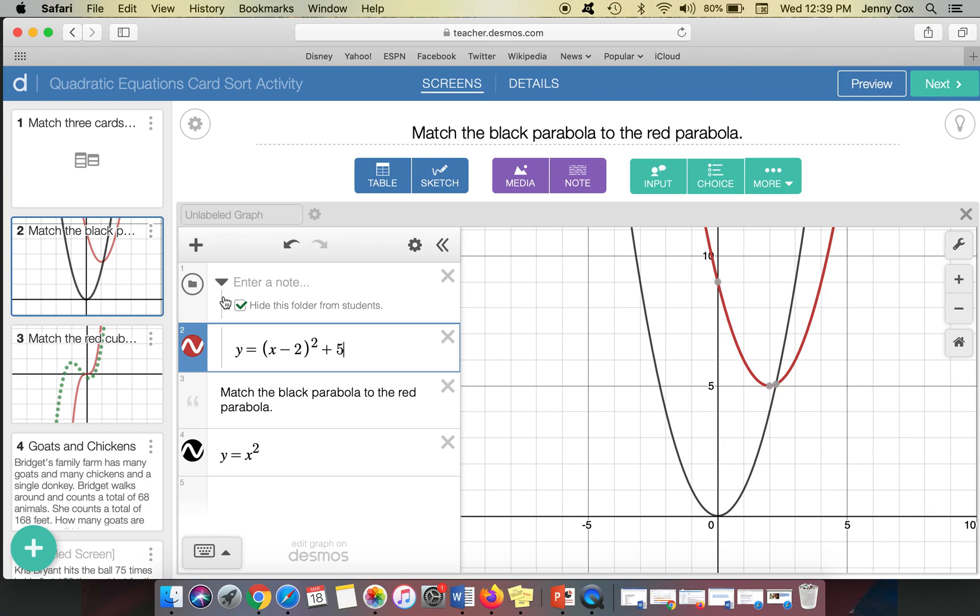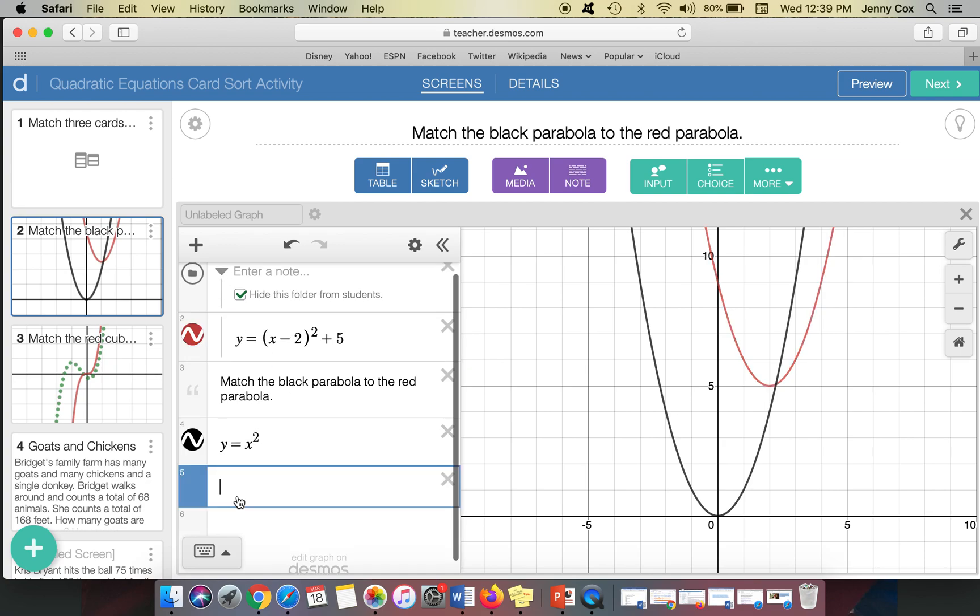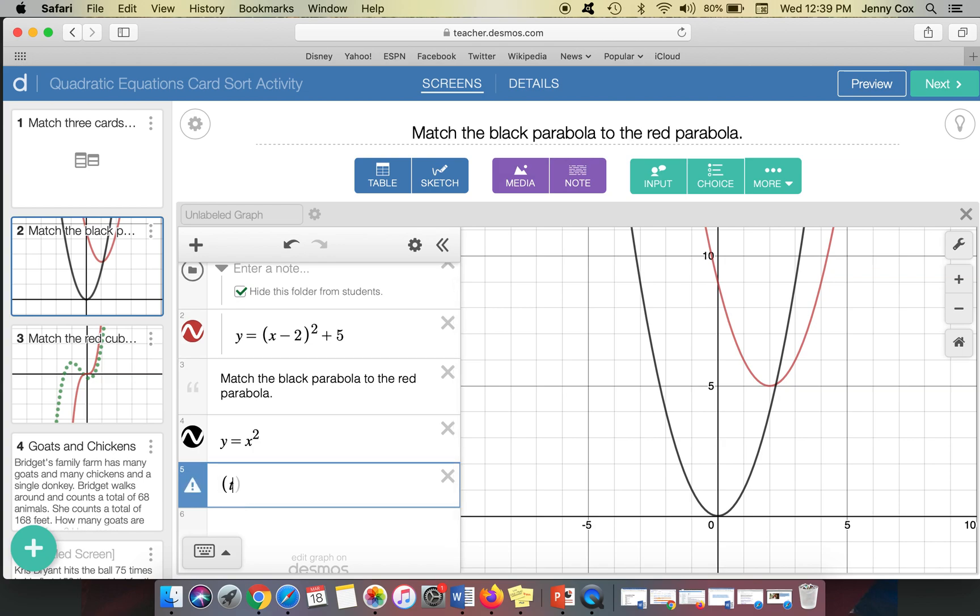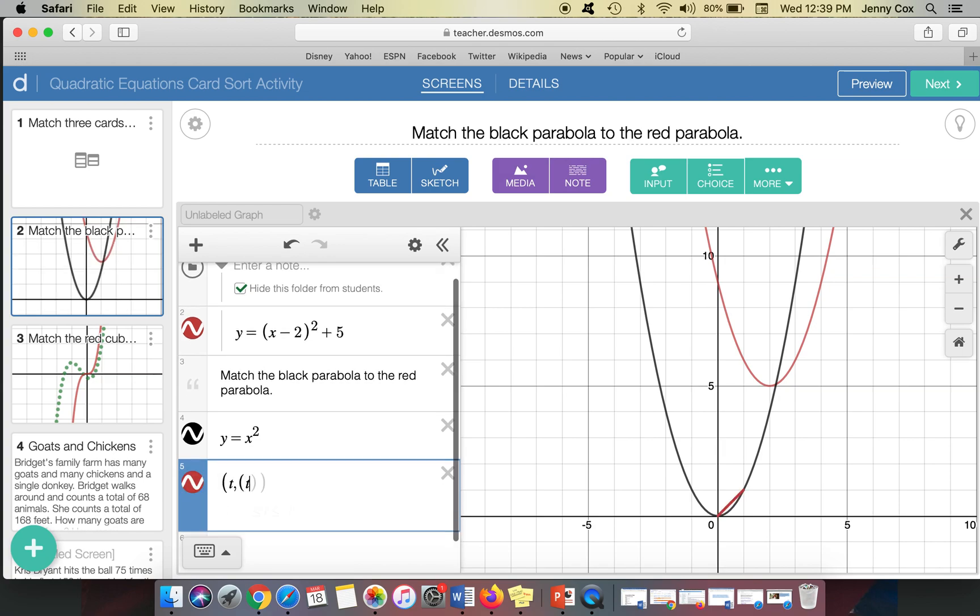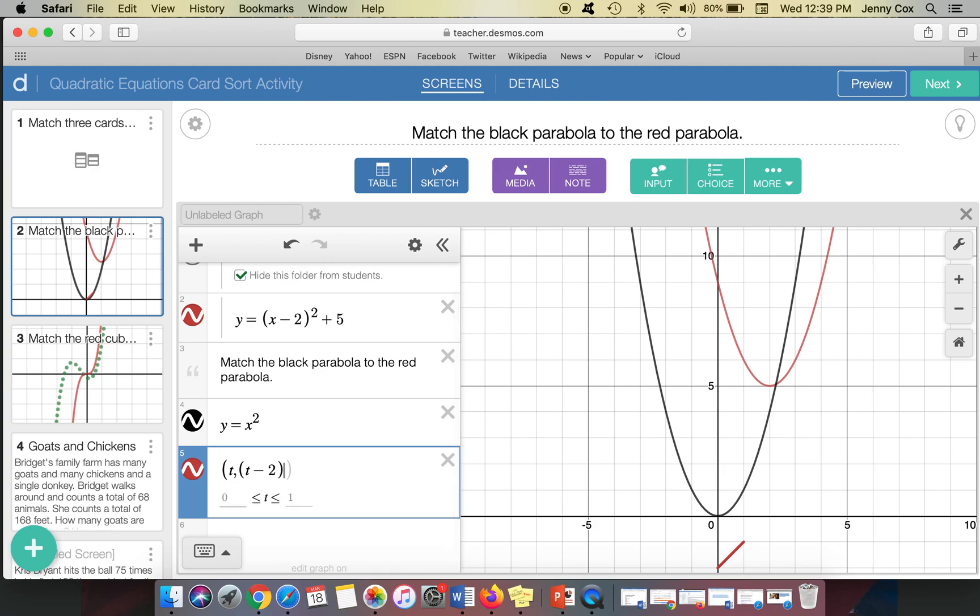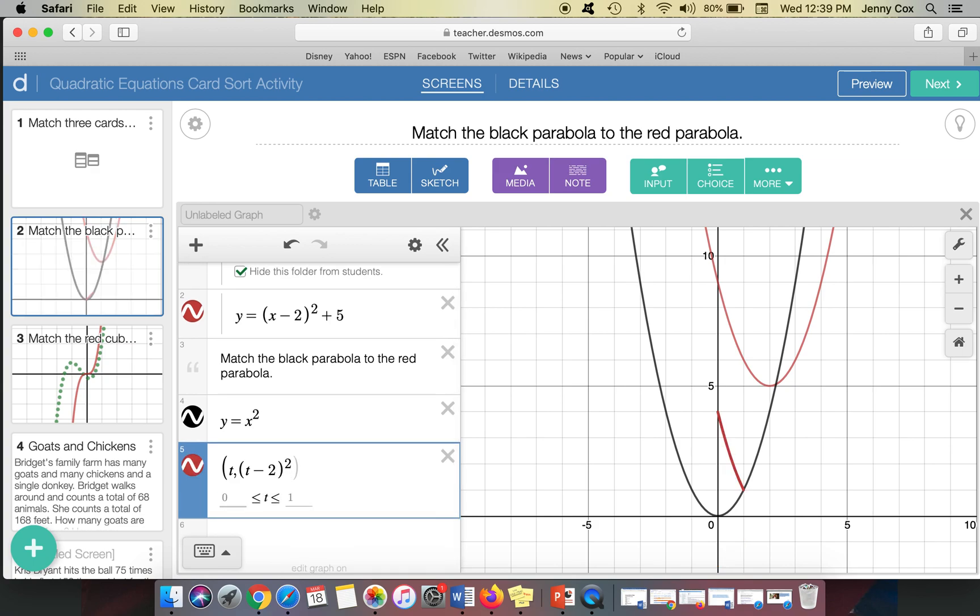So if you want this so that it's not clickable, then you input it as a parametric equation. So the way that we do that is we write it parentheses, t comma, and then we write it out just with t's. So (t, t minus 2 squared plus 5).